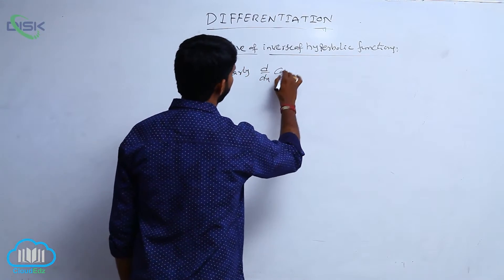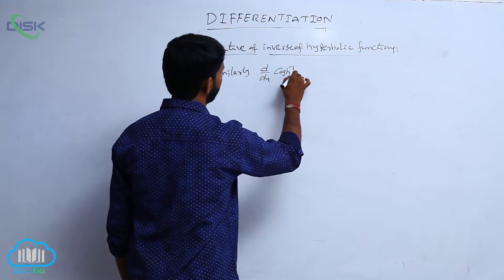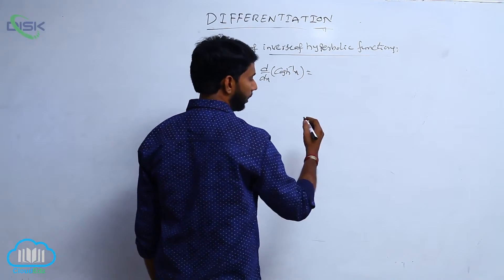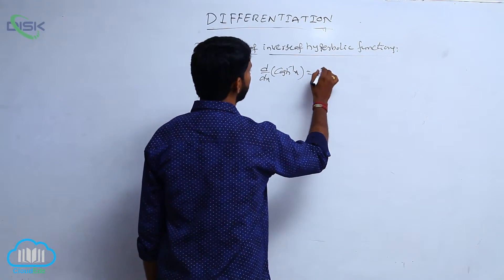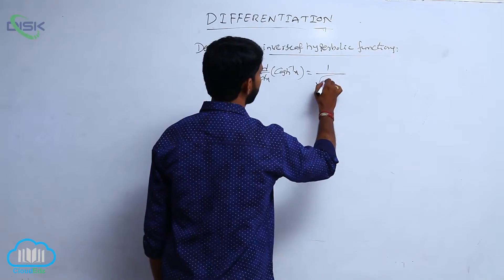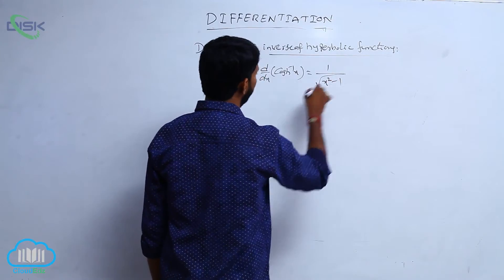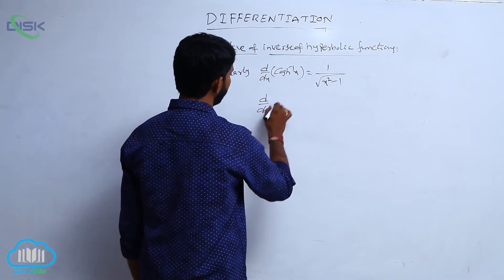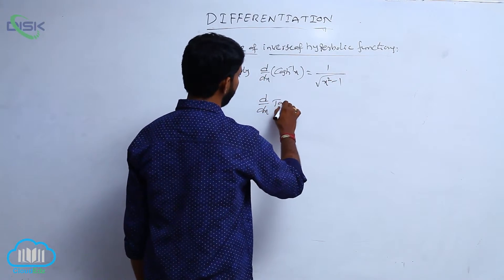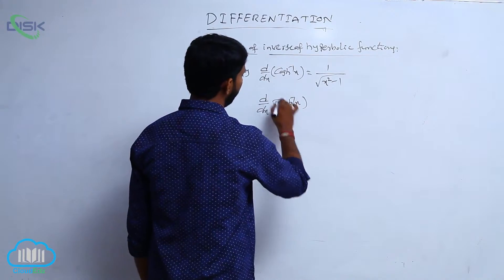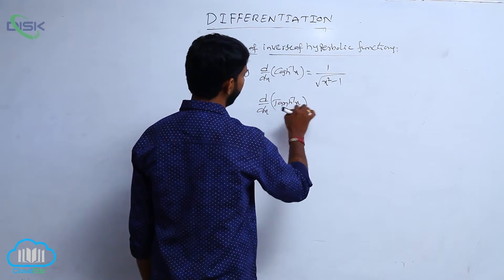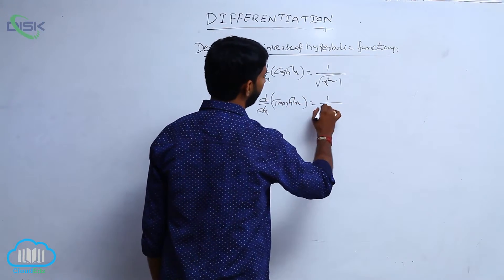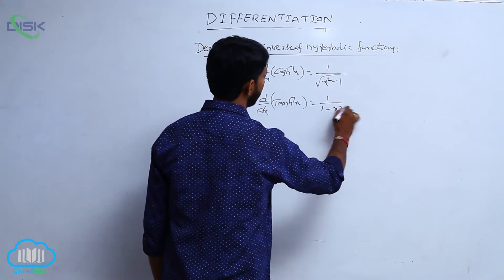d by dx of cosh inverse x is equal to 1 by root of x square minus 1. And d by dx of tanh inverse x is equal to 1 by 1 minus x square.